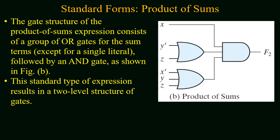For the previous example, the gate structure consists of a group of OR gates for the sum terms except a term with a single literal, followed by an AND gate, shown in figure b. This standard type of expression results in two-level structure of gates. At first level OR operation is performed for the sum terms, and for the product all of these terms are multiplied using AND gate.